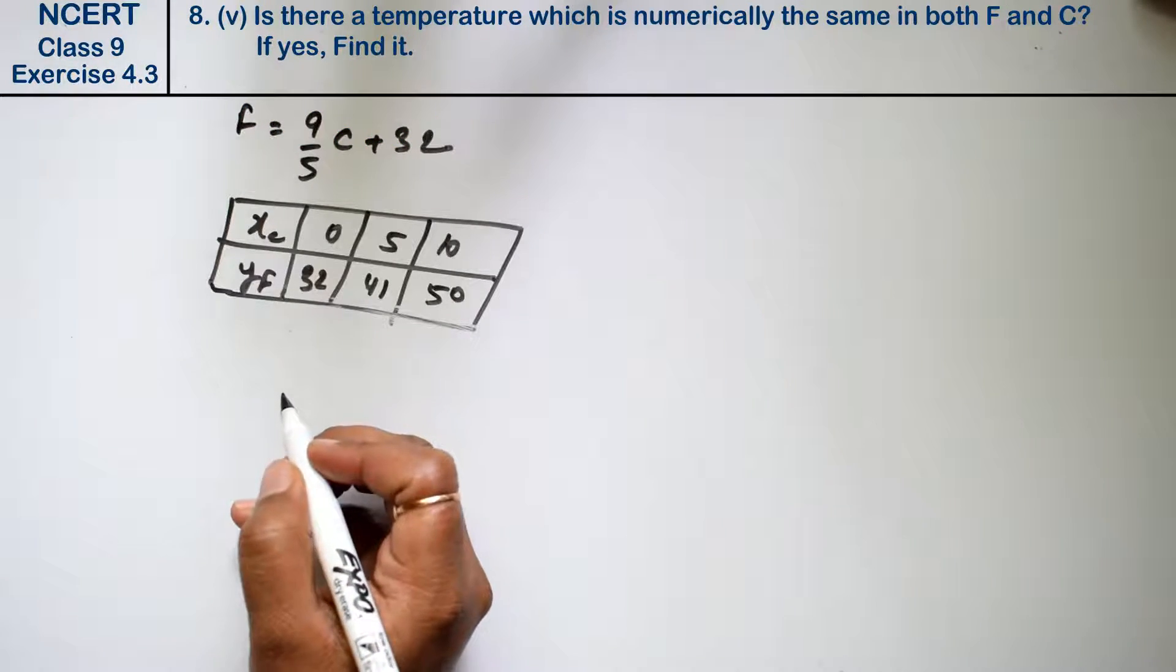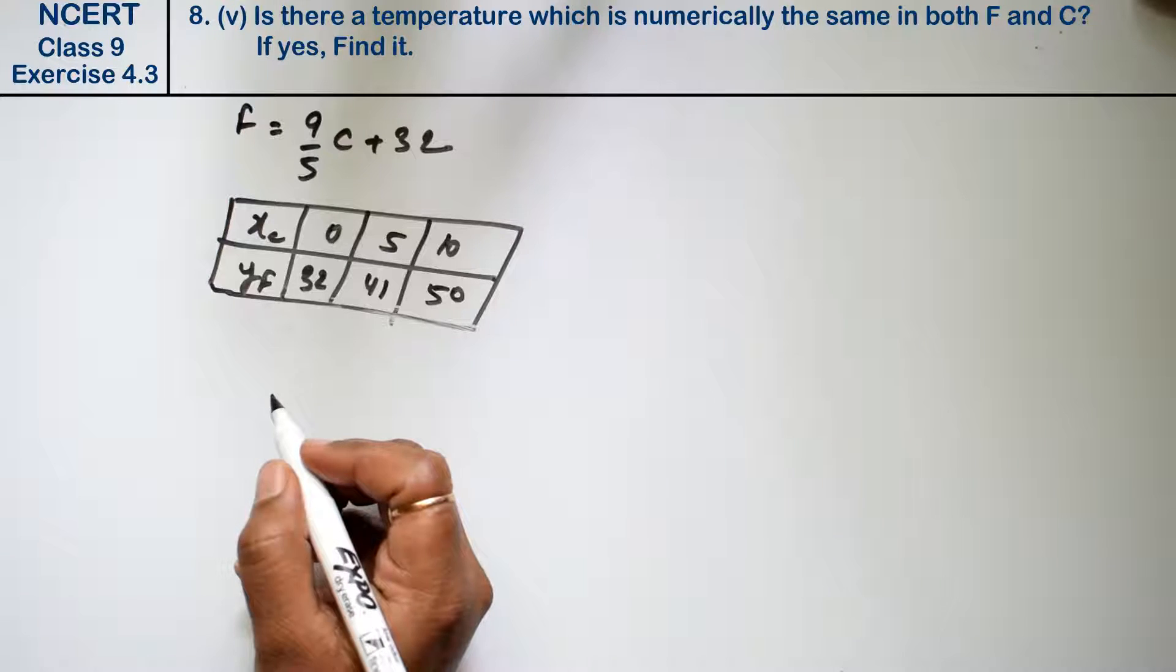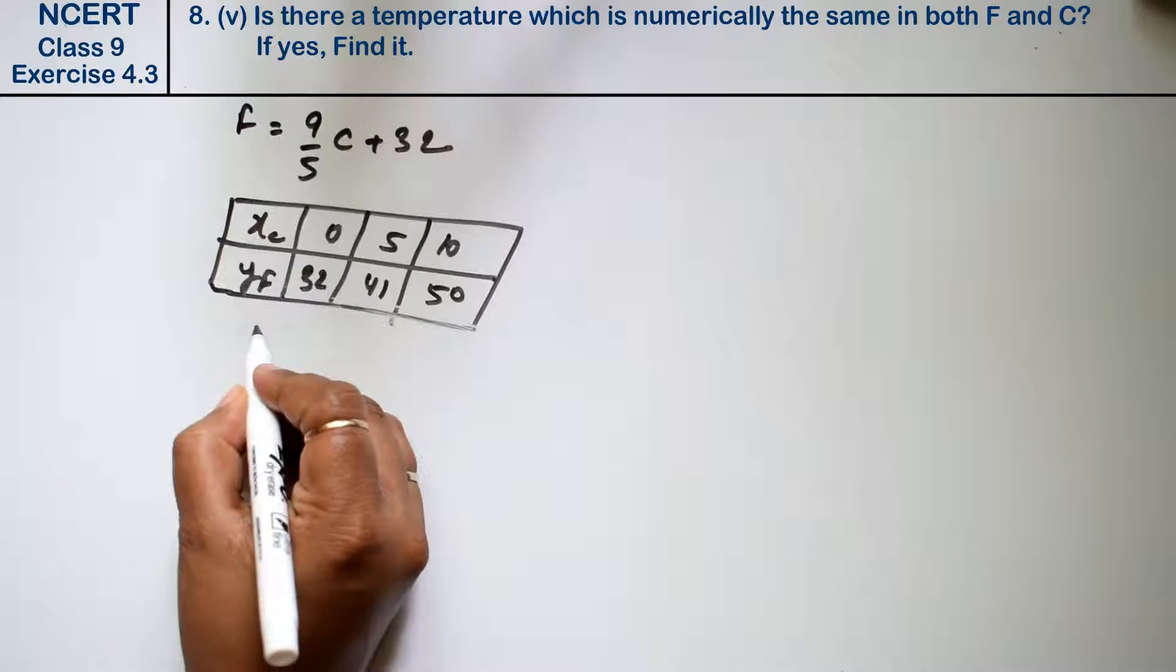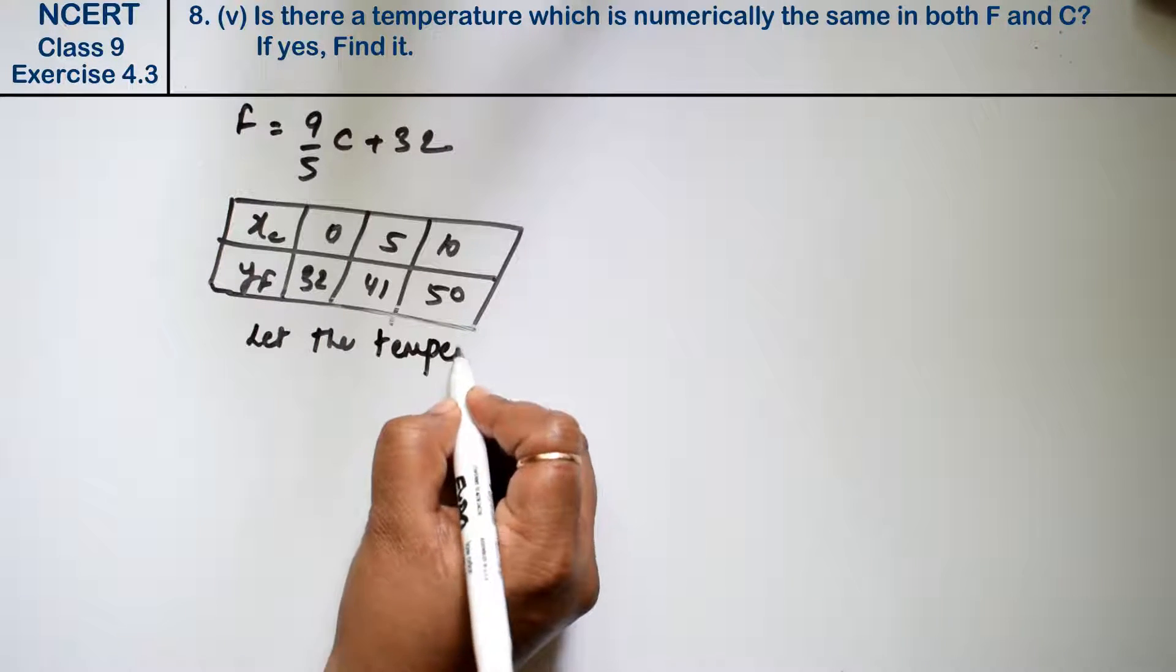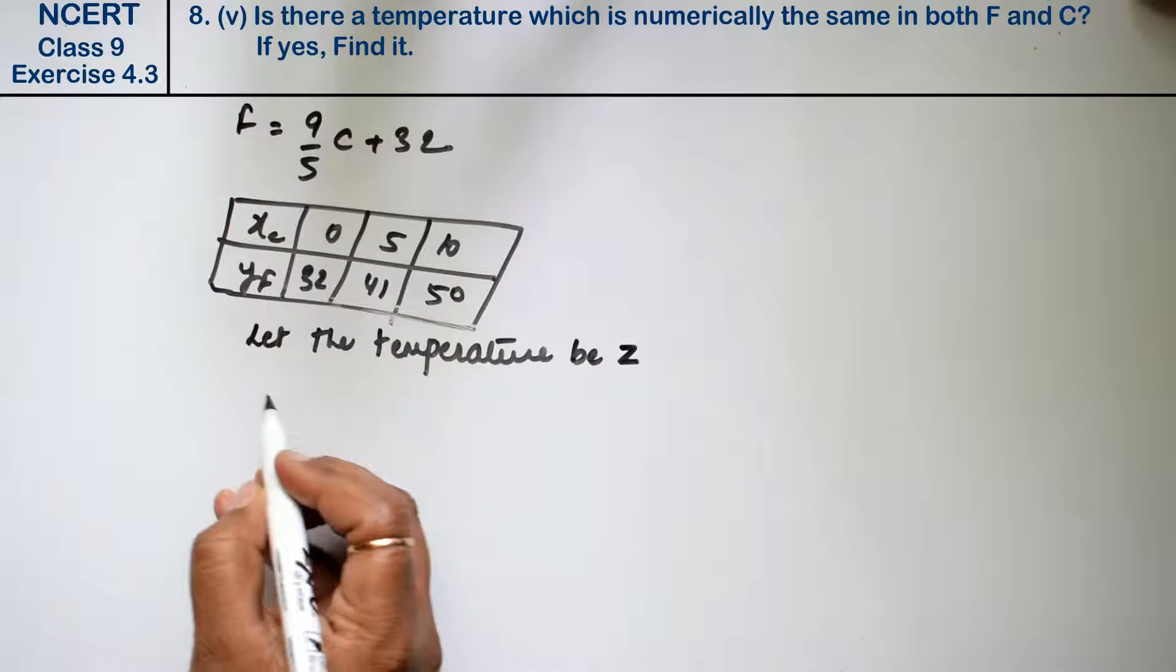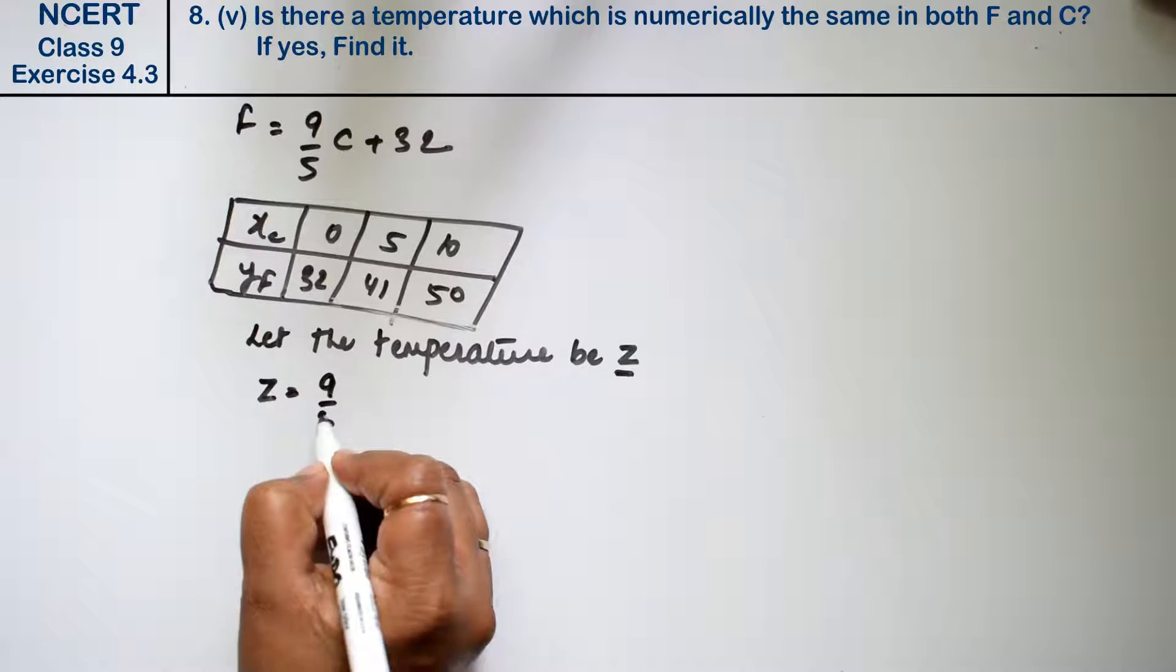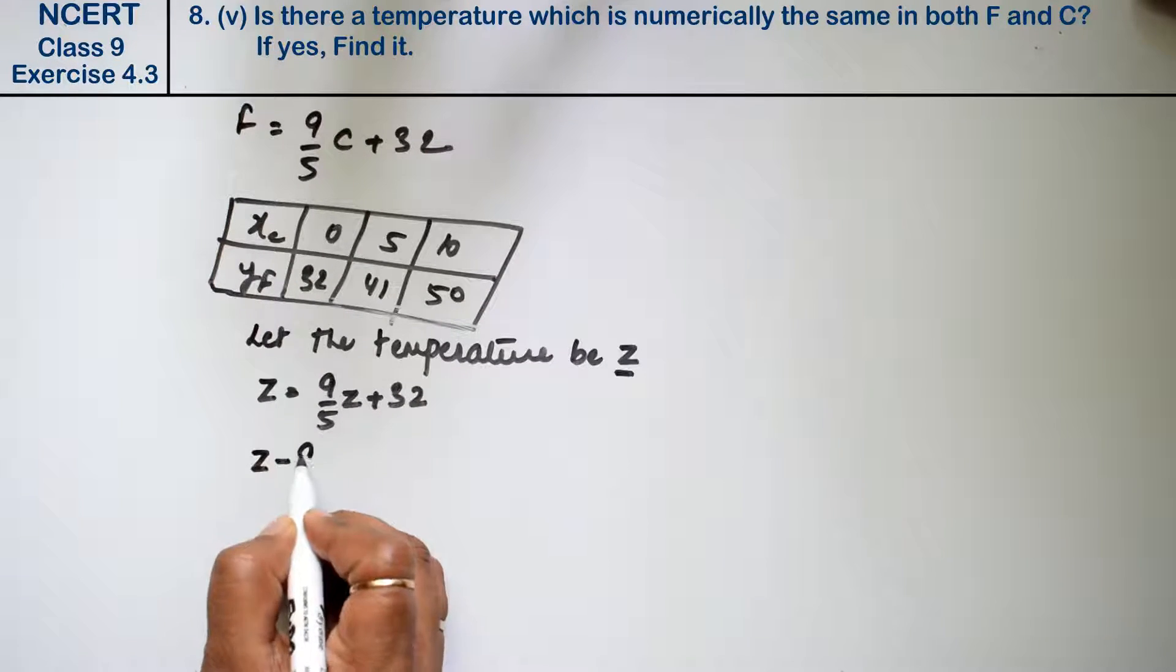Let's do last part. Is there a temperature which is numerically the same in both Fahrenheit and Celsius? If yes, find it. Friends, let us find which temperature is in Celsius and Fahrenheit. So let us consider, let the temperature be Z. Z degree in Fahrenheit and also Z degree in Celsius. So Z equals 9 by 5Z plus 32.